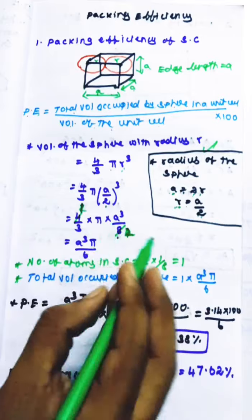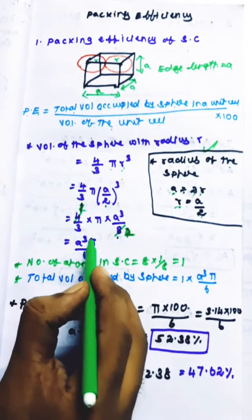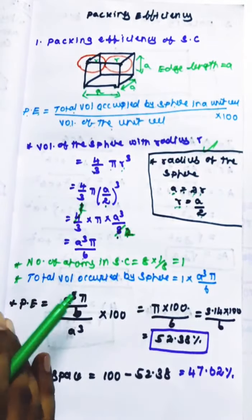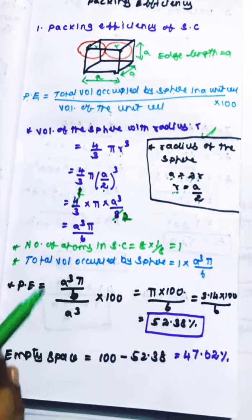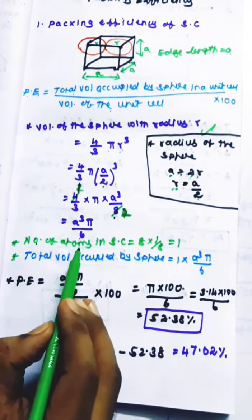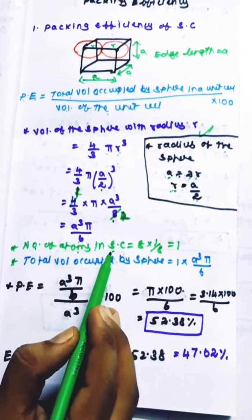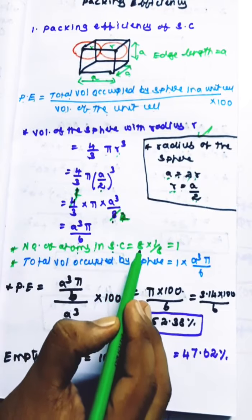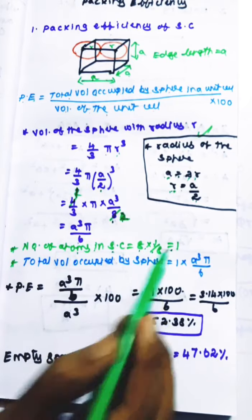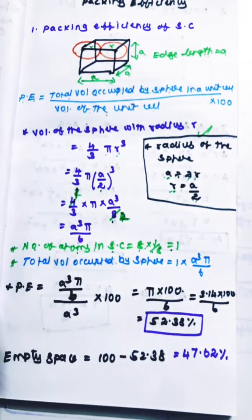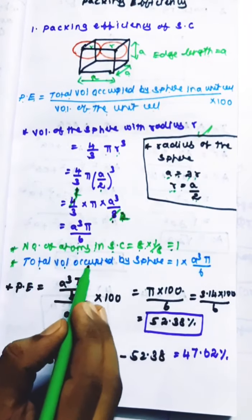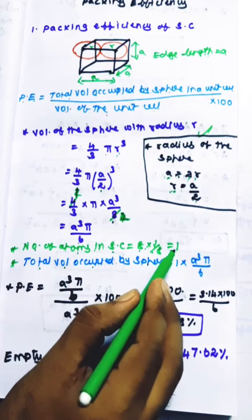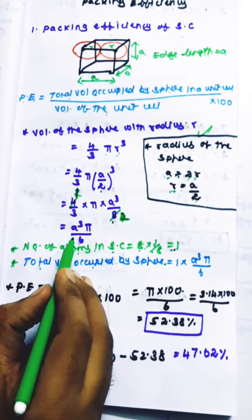Cancelling the 4s and 8, it becomes π a³ divided by 6. That is the volume of the sphere in terms of edge length. Number of atoms in the simple cubic — atoms only in the corners: 8 × 1/8 = 1. So the total volume occupied by the sphere equals 1 × π a³ / 6.